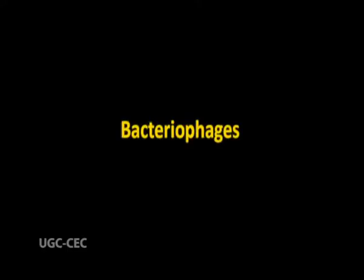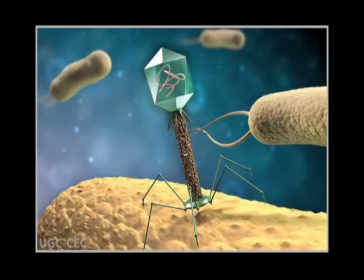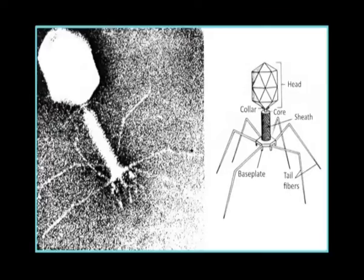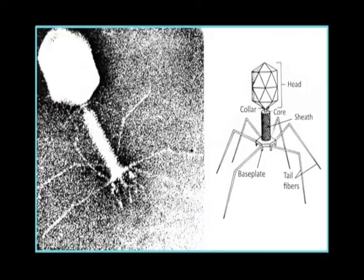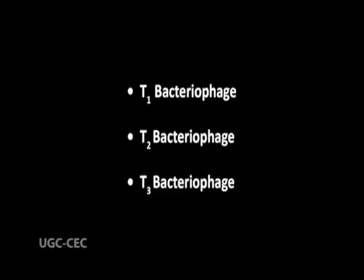On the basis of nature of host, viruses are classified into the following types. First, bacteriophages. Bacteriophages are the viruses which complete their life cycle in bacterial cells. They have a number of types: T1, T2, T3, T4, T5, T6 — the T series.